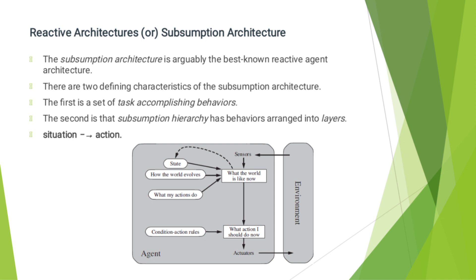The second one is Reactive Architecture, also known as Subsumption Architecture. The subsumption architecture is arguably the best known reactive architecture. It has two different characteristics: the first is task-accomplishing behavior, and the second is a subsumption hierarchy arranged in layers, mapping situation to action.